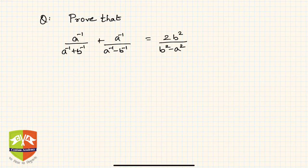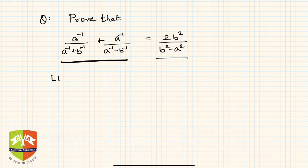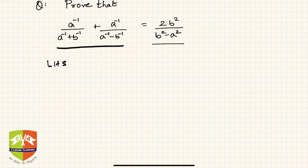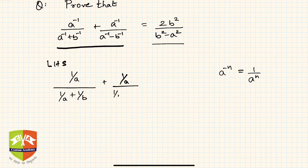In this next problem, we have to prove the LHS expression equals the RHS. Taking the LHS: a to the power minus 1 can be written as 1 upon a, so the first term is (1/a) divided by (1/a + 1/b), using the rule a^(−n) = 1/a^n. Similarly, the second term in the LHS is (1/a) divided by (1/a − 1/b).